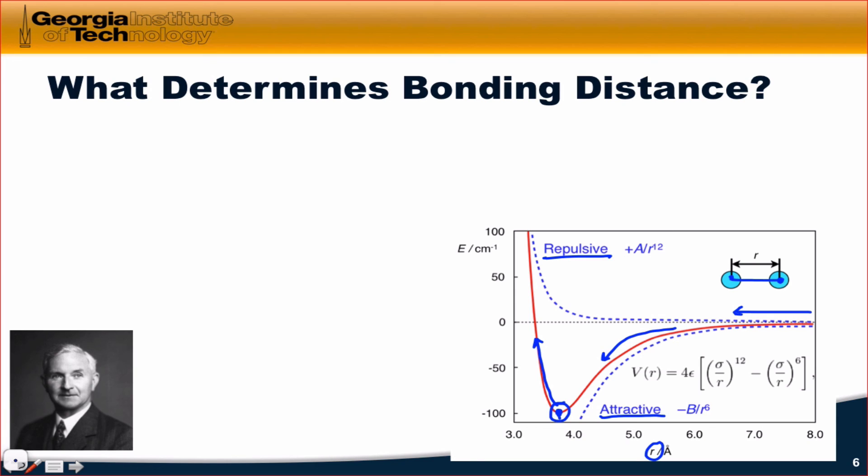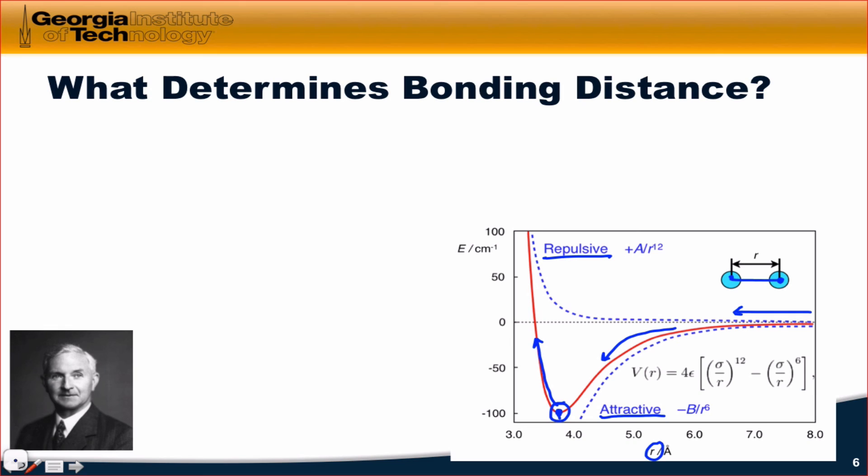This is known as the Leonard-Jones potential, and you see a picture of Leonard there on the left-hand side of the slide. So the bond length for a bond, or what you might hear referred to as the equilibrium bond length, is at a minimum in this energy versus R curve, and this is a very general shape for energy versus R, so it's worth keeping in mind.